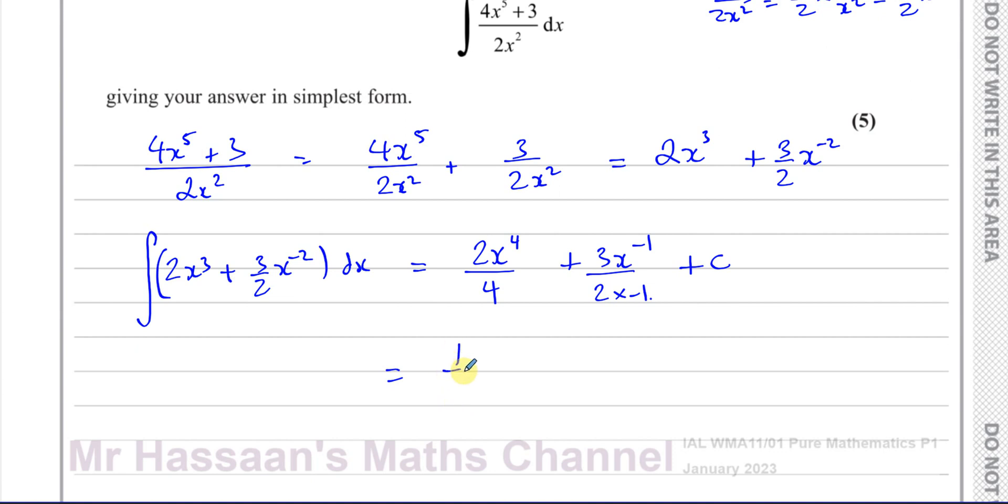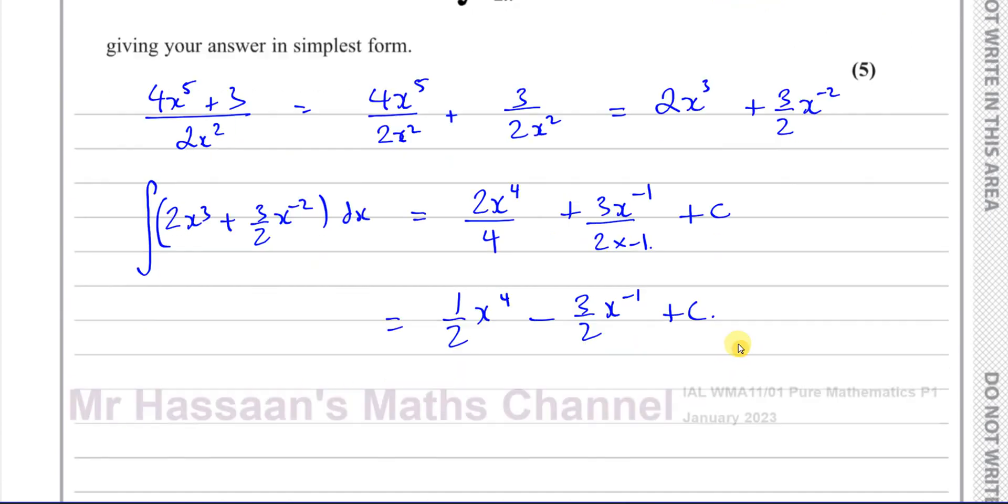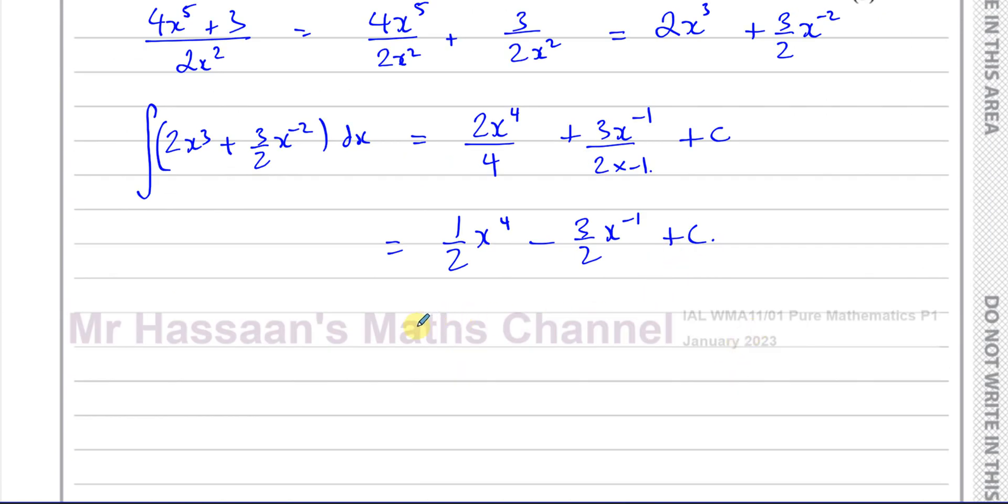So this gives me a half x to the power of 4 and this gives me, this 2 times minus 1 is negative. So it will be a negative term. 3 over 2x to the power of minus 1 plus c. And there's our answer. We could, if we want to, also express this as a half x to the power of 4 minus 3 over 2x plus c.